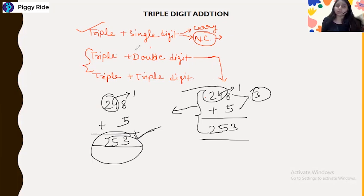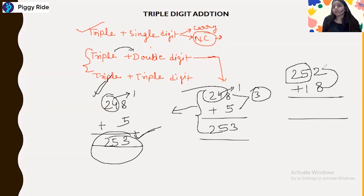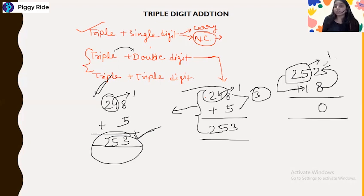For triple plus double digit numbers, you follow this rule. Let's take the example 252 plus 18. First, take the leftmost two digits: 25. Then 2 plus 8 gives end digit 0. Now add 25 plus 1 to get 26, and since there is a carry of 1, 26 plus 1 equals 27. So the answer is 270.